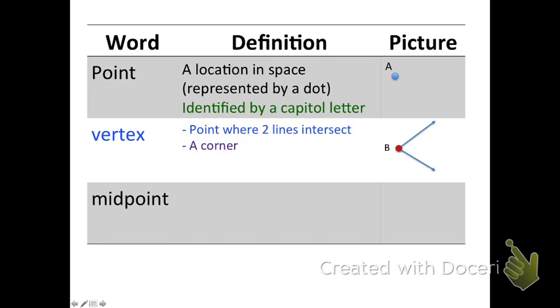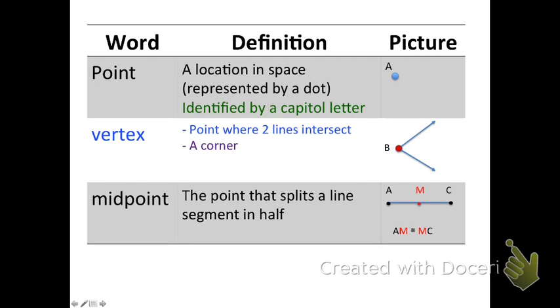The third word is midpoint. Midpoint is the point that splits a line segment in half. Okay, so let's start drawing this. We have a line segment. Then we have one end point here and another end point there. We have the point that is right in the middle. We have to name all of those points. So I'm going to name them A and C would be my end points. M would be my midpoint. Because it's right in the middle. One way that you can write this is you can write AM is congruent to MC.